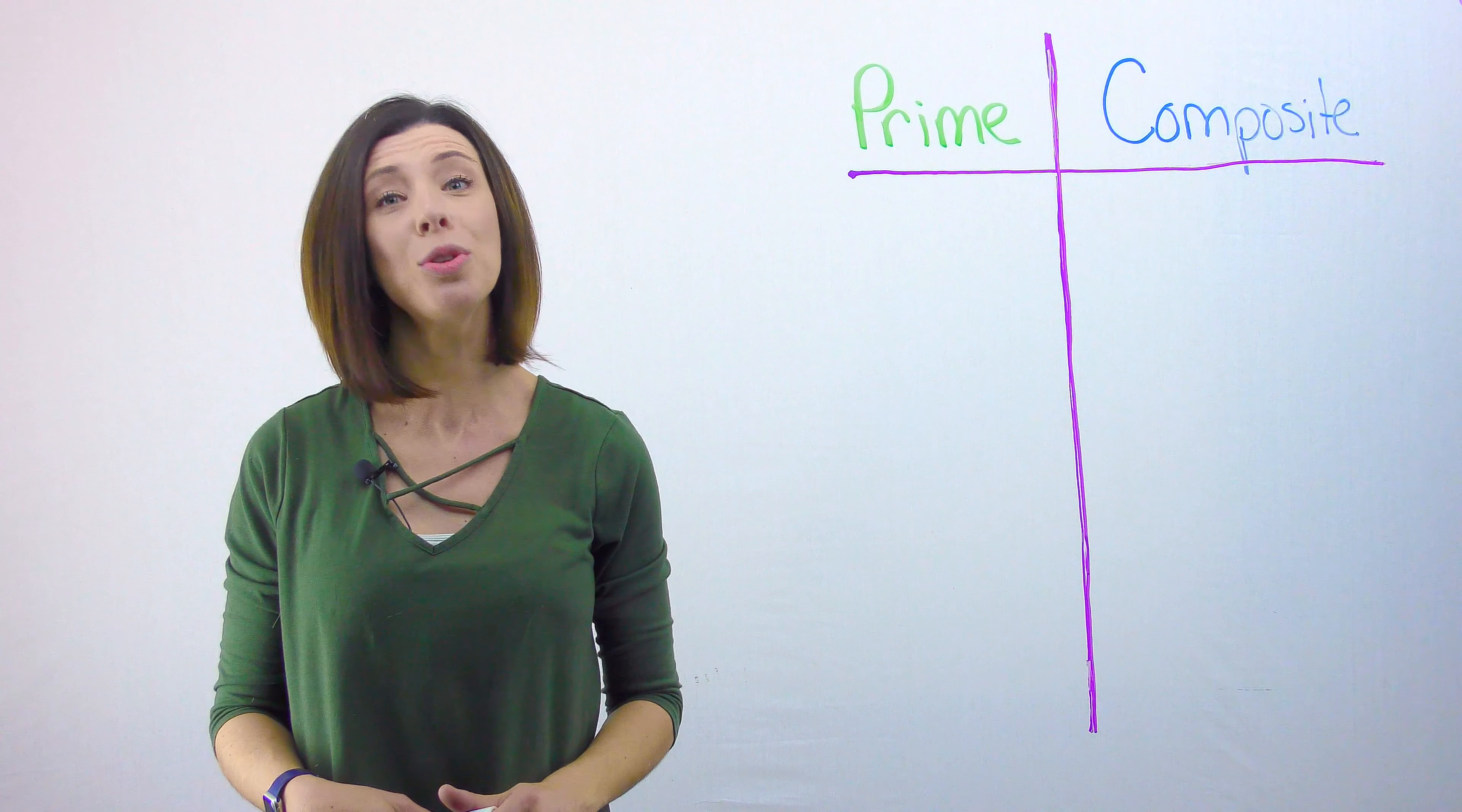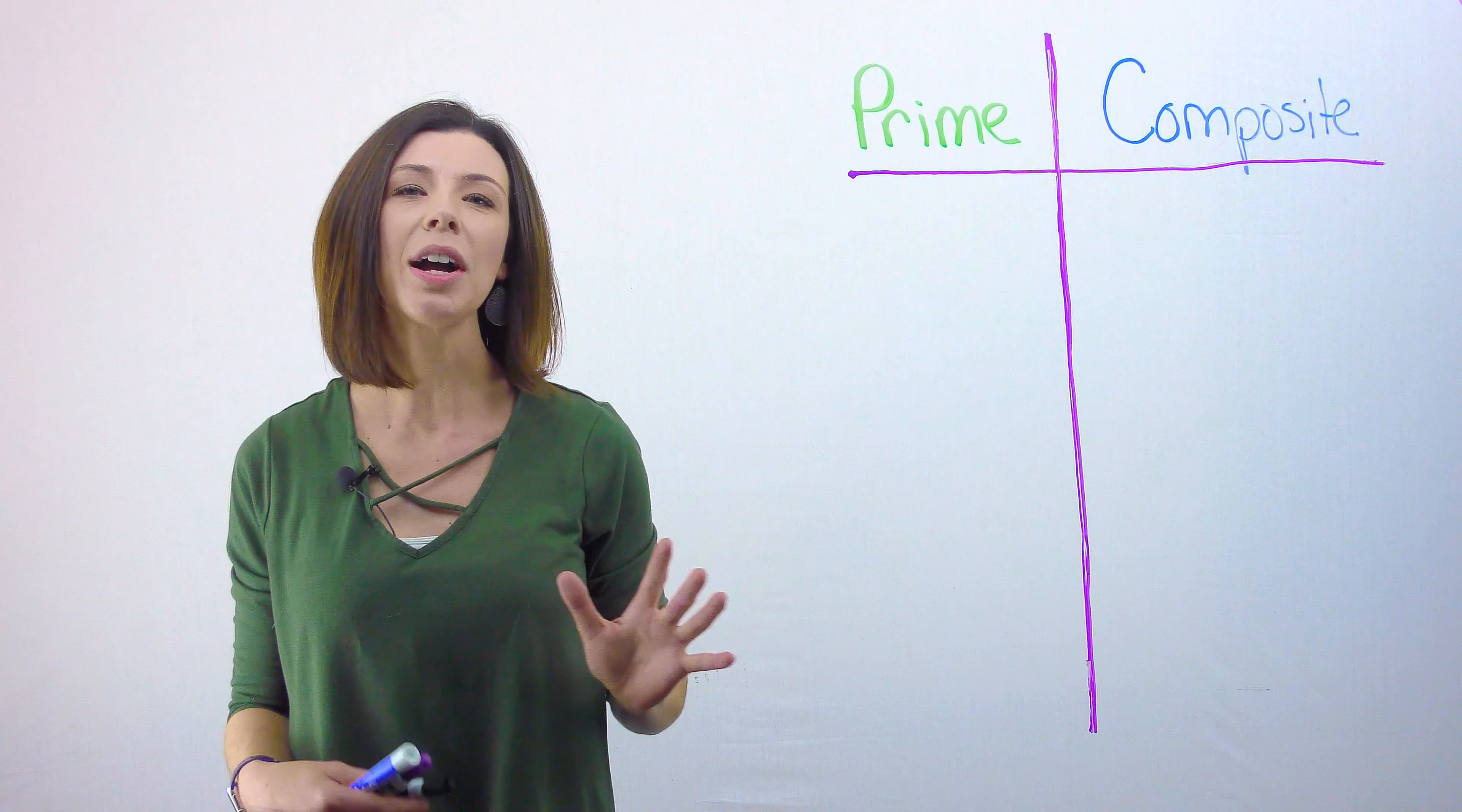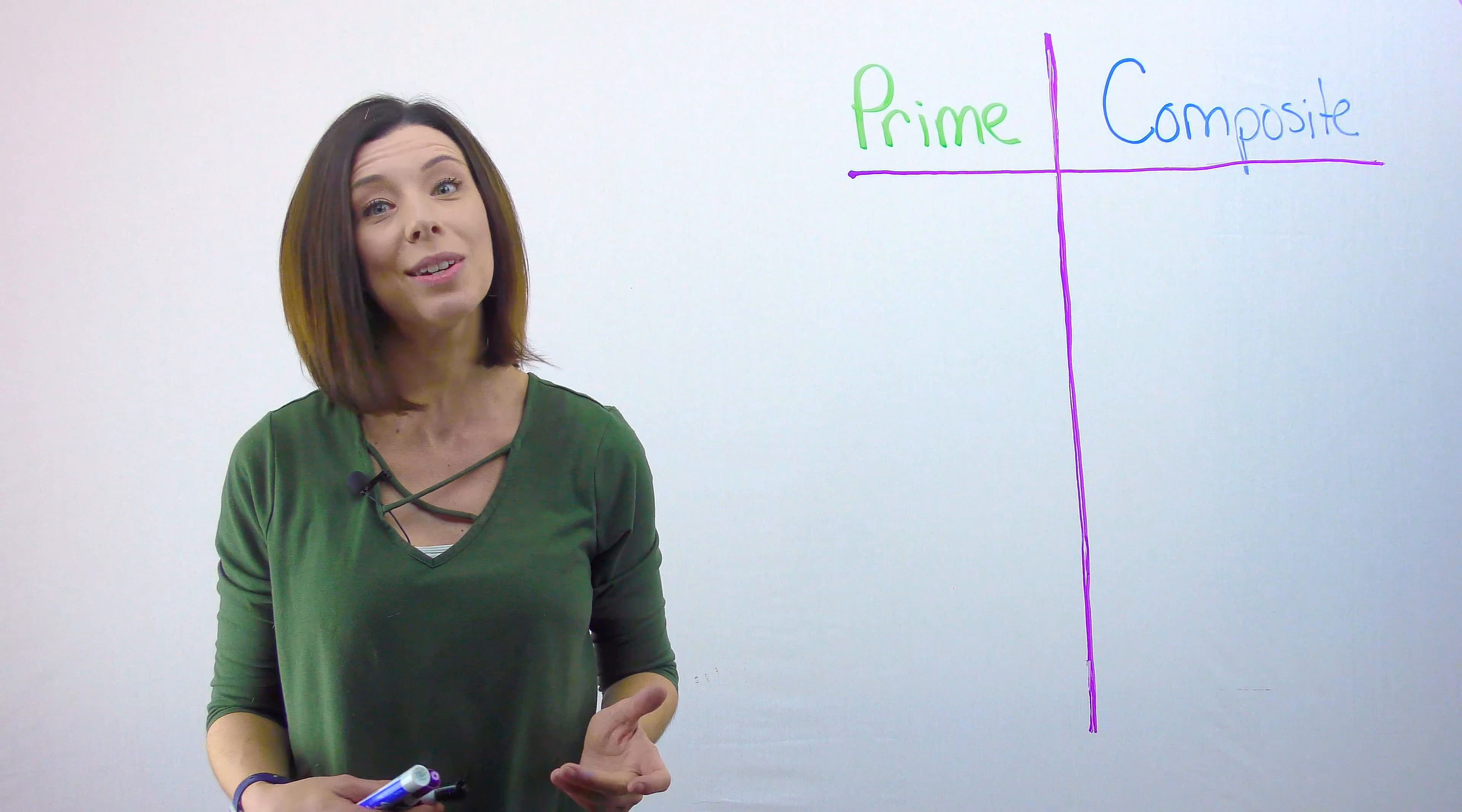If prime or composite numbers throw you for a loop, this video is going to help. Okay, so first let's talk about what the definitions are for each, and then we're going to talk about those special numbers that really throw us for a loop: zero and one.